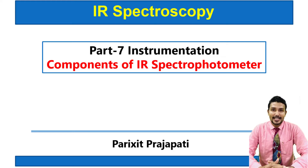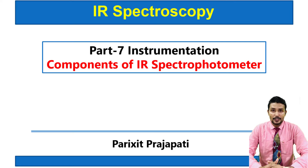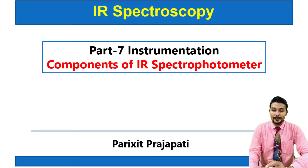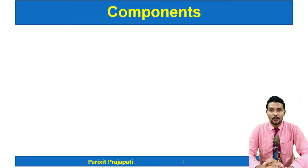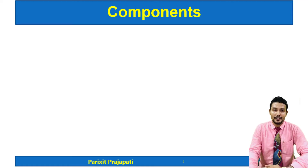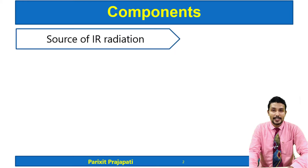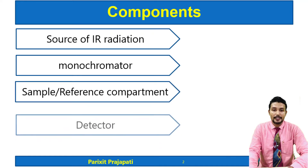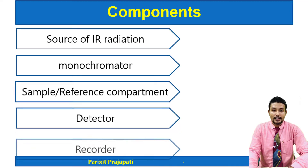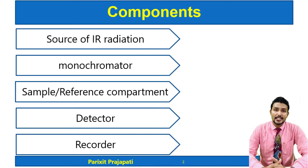Hello everyone, welcome to the session on IR spectroscopy. Here we will discuss the instrumentation part of the IR spectrophotometer. The topic of discussion is components of IR spectrophotometer: source of IR radiation, monochromator, sample and reference compartment, detector, and recorder.